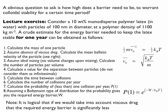The question is: consider a 10 weight percent monodisperse polymer latex in water with particles of 100 nm diameter, at a polymer density of 1100 kg/m³. A crude estimate for the energy barrier needed to keep the latex stable for one year—what is the barrier energy I need on my particles so that you don't get a single collision for a year? I've given you eight hints on how to solve it. Let's have a go at this. You can work together.